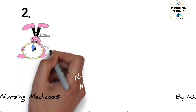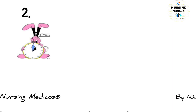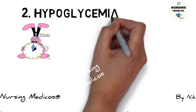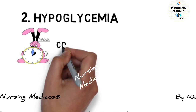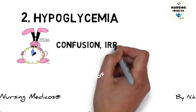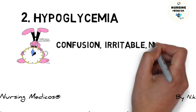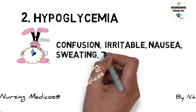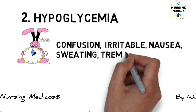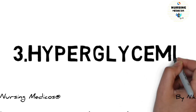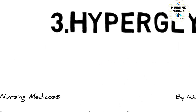Second one is hypoglycemia. In case of hypoglycemia, the patient feels confusion, irritability, nausea, sweating, and tremors.